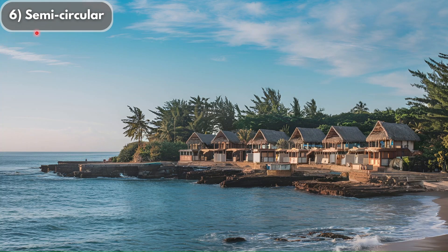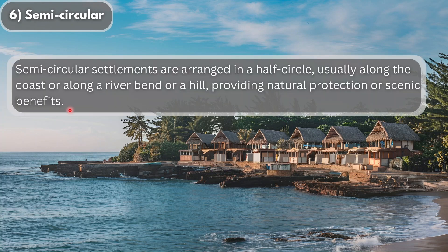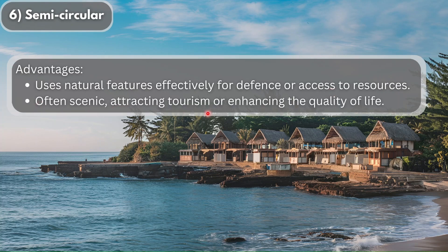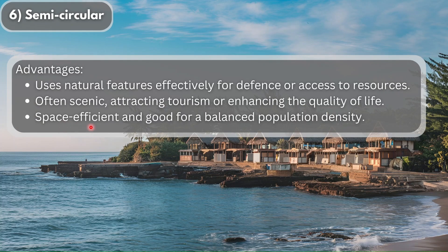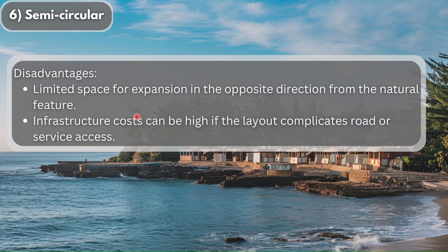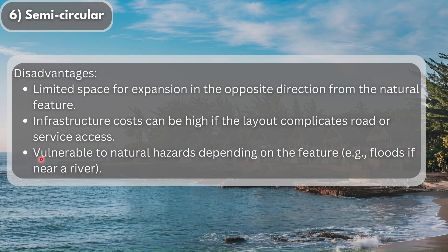The last type of settlement is semi-circular settlements, where we can see chalets built along a coast. Semi-circular settlements are arranged in a half circle, usually along the coast, a river bend, or a hill, providing natural protection or scenic benefits. Advantages include effective use of natural features for defense or resource access, scenic appeal attracting tourism, and space efficiency. Disadvantages include limited expansion space opposite the natural feature, high infrastructure costs, and vulnerability to natural hazards such as floods if near a river.